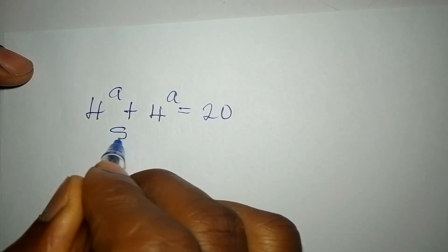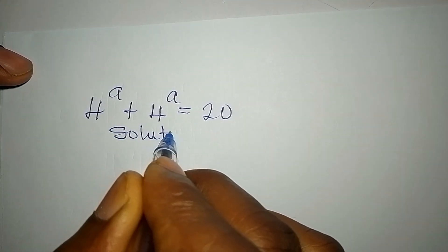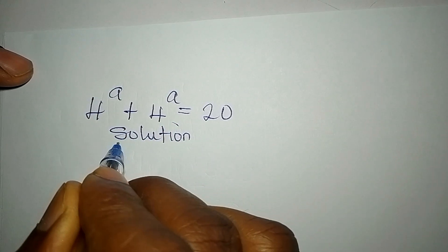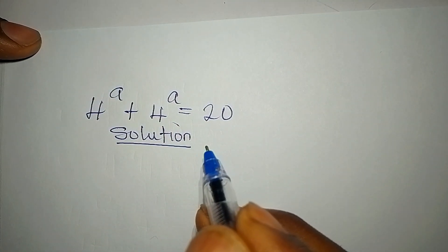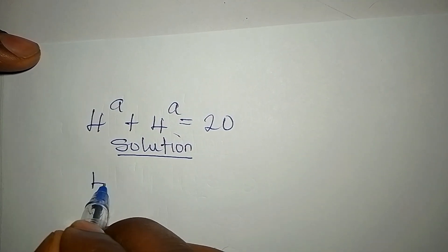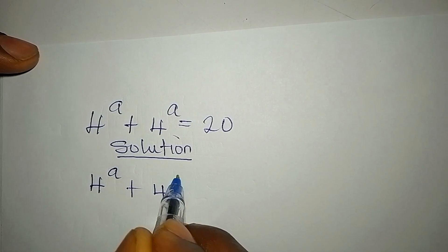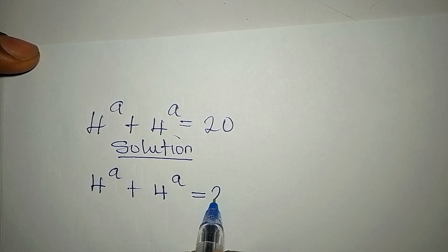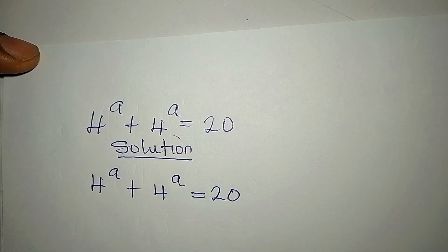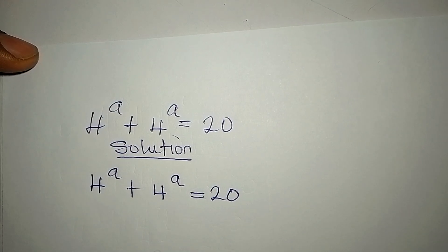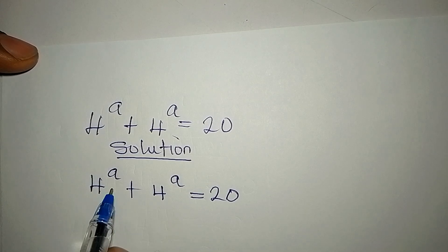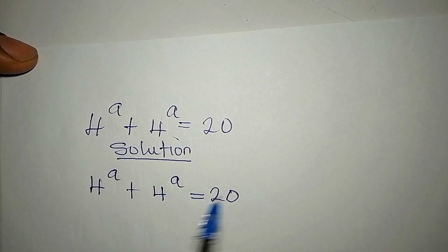Hello everyone. Welcome to Foucault Mathematics. And before us, we have 4 to the power of a plus 4 to the power of a equals 20. We should find the value of a in this equation.